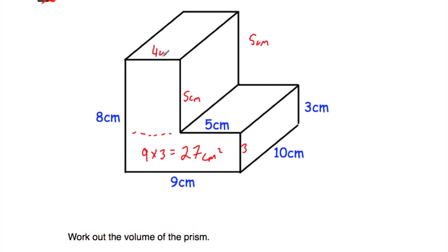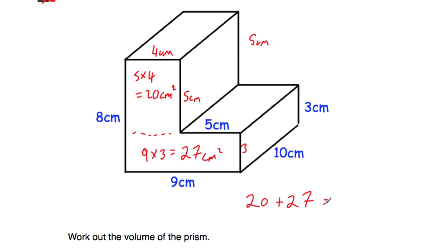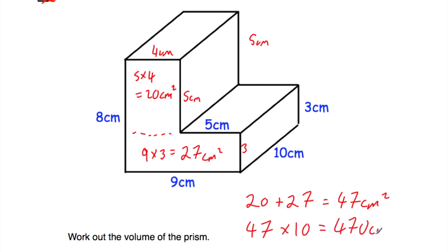The width of the whole shape is 9 centimetres, and the width of this part is 5 centimetres, so 9 take away 5 is equal to 4 centimetres. So the rectangle on top is 5 by 4, giving an area of 20 centimetres squared. Adding them together: 20 plus 27 is 47 centimetres squared — that's the area of the cross-section. Now we multiply by how long the shape is: 47 times 10 is equal to 470 centimetres cubed. So the volume of this prism is 470 centimetres cubed.